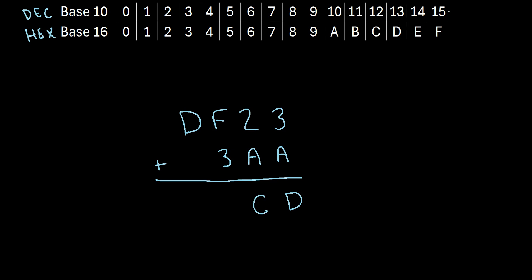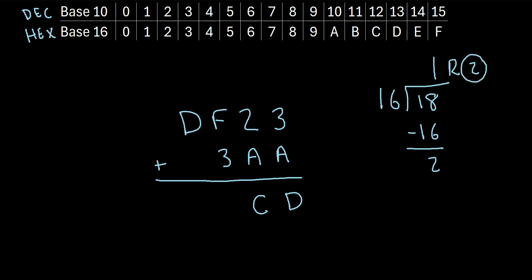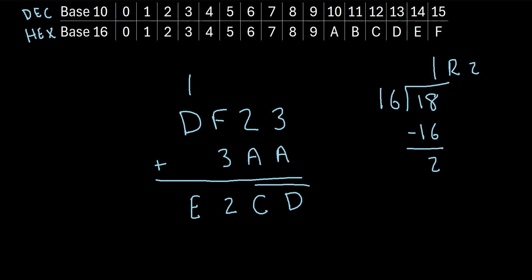In the next column, we have F plus 3. F is the same as 15. So we really have 15 plus 3, which is 18. The hexadecimal system doesn't go up to 18. So we use the trick: how many 16s go into 18? Just 1. So 1 times 16 is 16. Then 18 minus 16 is 2, so our remainder is 2. We write the remainder right here, and the whole number 1 goes on top of the next column. Lastly, we have 1 plus D. D is the same as 13. So we really have 1 plus 13, which is 14. And in the hexadecimal system, 14 is represented by an E. So our final answer is E2CD.